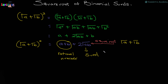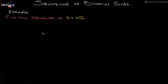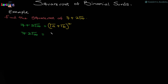Whenever we have any binomial surd and we need to find its square root, we equate it to (√a + √b) squared to get the answer. Now I'm going to use this example: find the square root of 7 + 2√10. To solve this, we bring down the binomial surd 7 + 2√10, and set its square root equal to (√a + √b) squared.